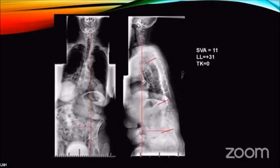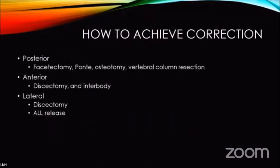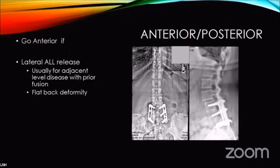For example, with a severely deformed spine, you first identify which levels need treatment, perform biomechanical measurements, and determine the required correction — in this case, at least 91 degrees. Different approaches are available: anterior, posterior, and lateral. Posteriorly you can do facetectomy, pedicle osteotomy, or vertebral column resection; anteriorly, discectomy or interbody releases; laterally, discectomy and ALIF releases. SPOs give approximately 9 to 10 degrees of correction per level, so multiple levels can achieve moderate correction. For 25 to 30 degrees of correction, pedicle subtraction osteotomies are used. For corrections greater than 40 to 45 degrees, vertebral column resections at the thoracic or lumbar level are possible.